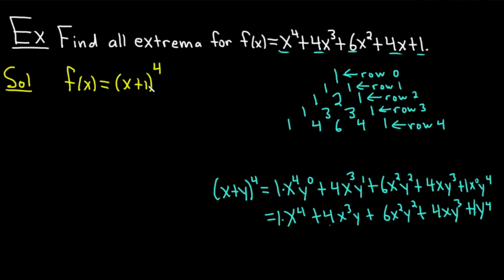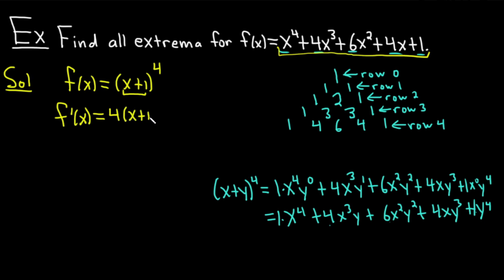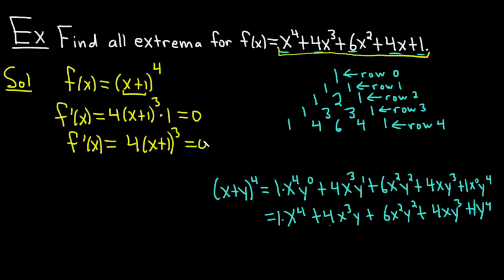Now that we've established we can write this function as (x plus 1) to the fourth, let's use the second derivative test. f prime of x requires the chain rule since x plus 1 is the inside function. Bring down the 4, differentiate the outside leaving the inside untouched, subtract 1 from the exponent to get (x plus 1) cubed, times the derivative of the inside which is 1. So f prime of x equals 4(x plus 1) cubed equals 0, giving x equals negative 1.